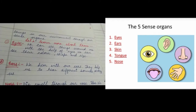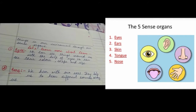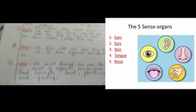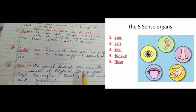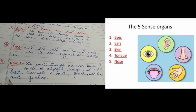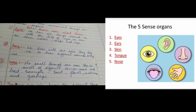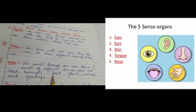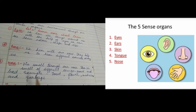Next, nose. We smell through our nose. We can smell different things, whether the smell is good or bad. Examples include food, flour, medicines, and garbage. You can identify smells through your nose.